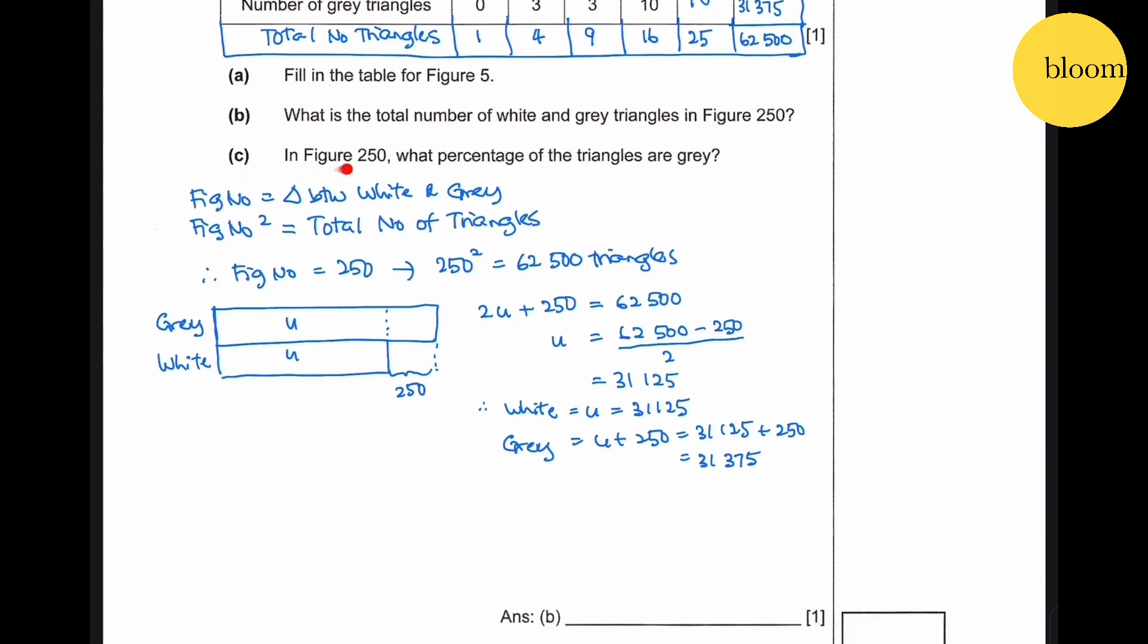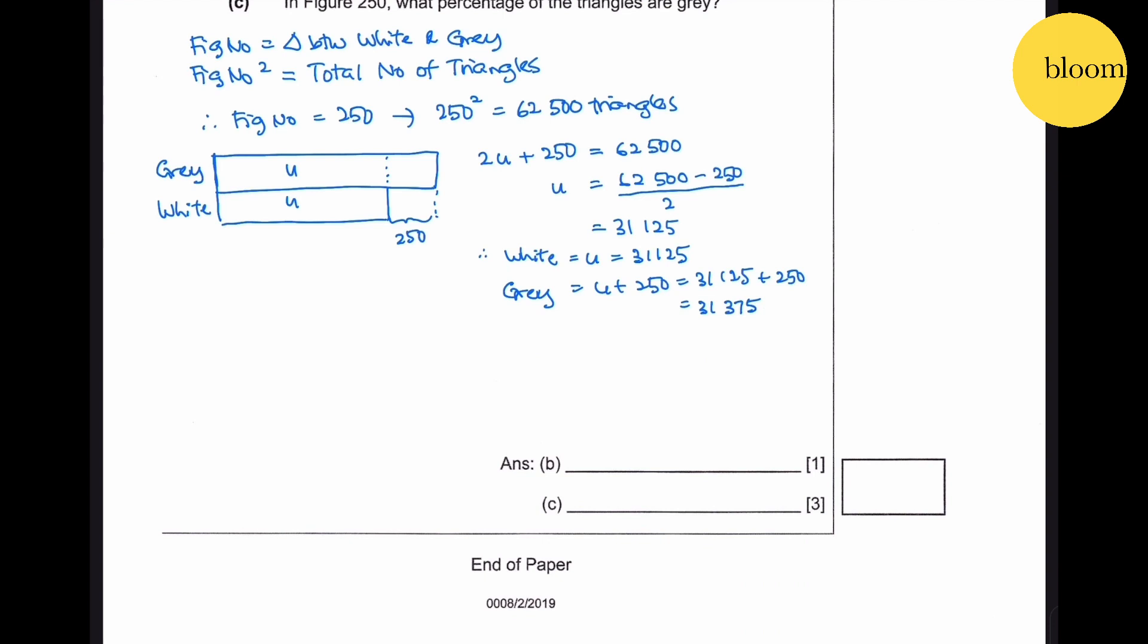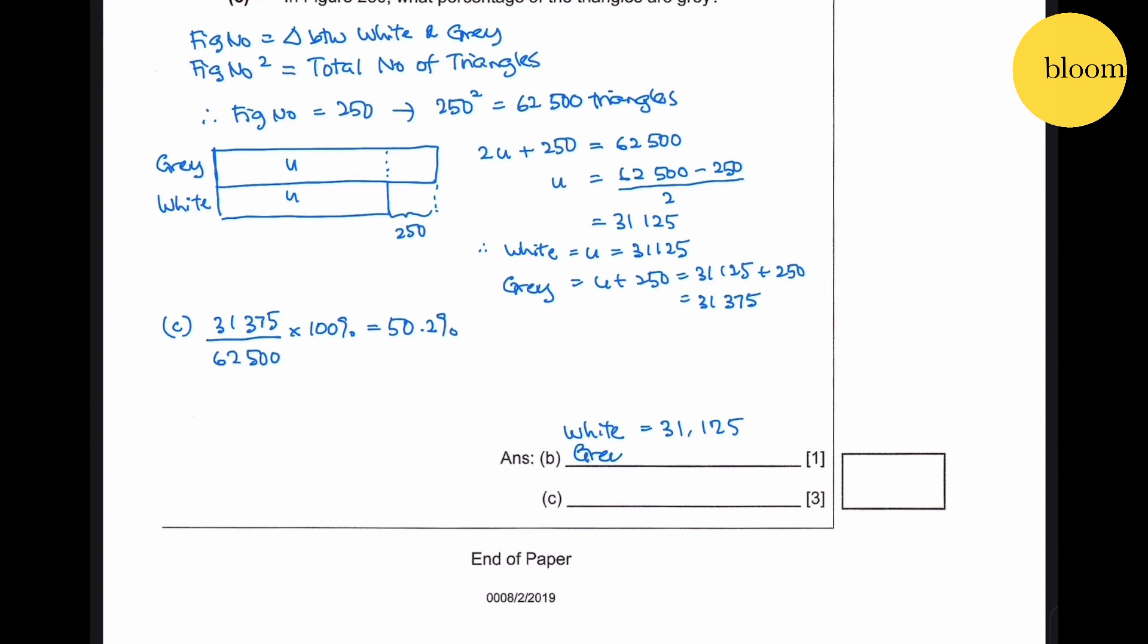Part C: In figure 250, what percentage of the triangles are gray? So we know gray is 31,375. Total triangles is 62,500. Multiplied by 100%, that will give us 50.2%.